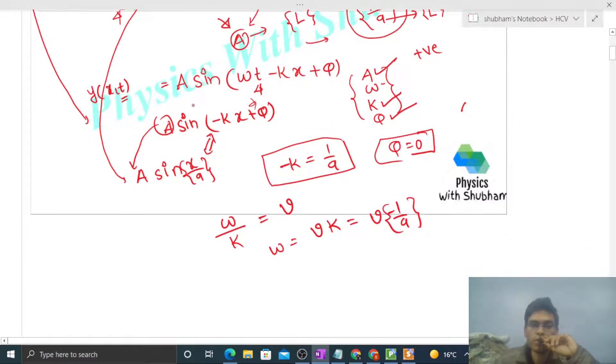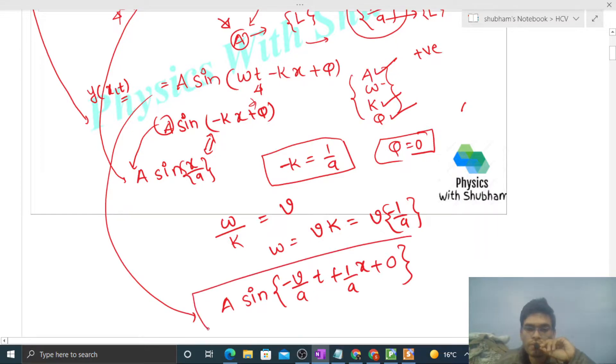Now just put the values. Aap dekho jo equation hoga: A sine, omega ki jagah kya put karoge? Minus of v upon a into t. Minus, minus k put karna hai, so k ka value minus one upon a hai, so minus one upon a put karoge, so ye plus ho jayega into x plus phi. Phi ka value zero hai, so ye aapki equation ho gayi standard form mein.